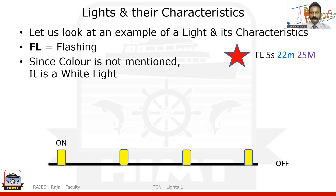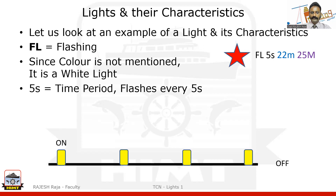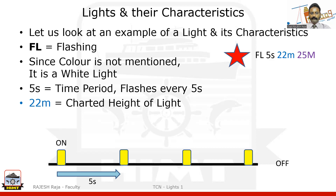The second character in the nomenclature says five seconds time period. The time period is measured from the start of the first flash to the start of the second flash, and again from second to third — the gap between them is five seconds. 22m (small m) is meters, which is the charted height. 25M (capital M) is the nominal range of that light, which is 25 nautical miles. I will talk about nominal range and different ranges in a separate part of this series.